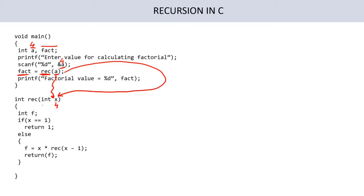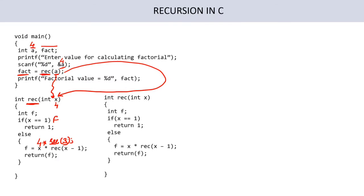Inside the body of 'rec', I created a variable 'f'. I check: is x equal to 1? No, x is 4, so condition is false. I go to the else part: f = x × rec(x-1), that is 4 × rec(3). Inside 'rec', I'm calling 'rec' again with a new value — a clear-cut example of recursion. Now calling rec(3): x is 3, condition is false again, so 3 × rec(2).